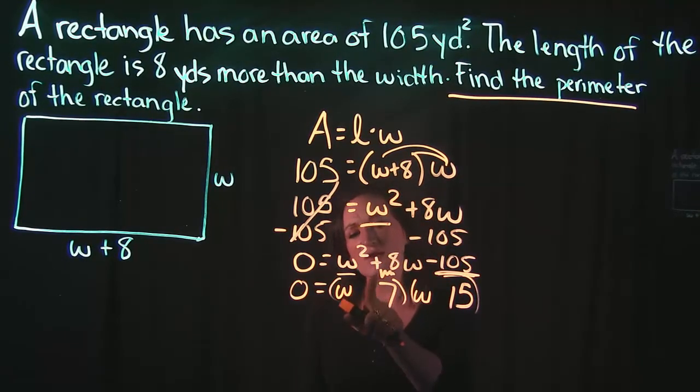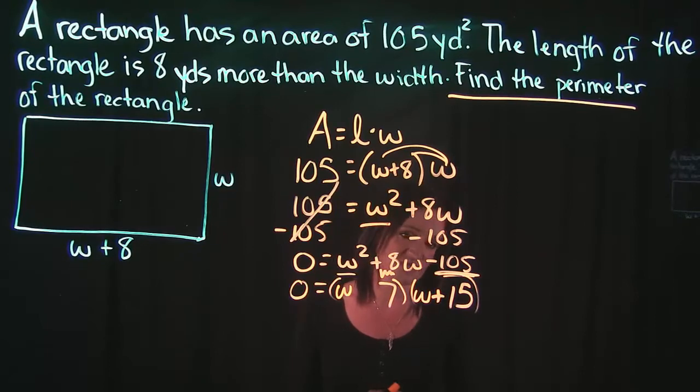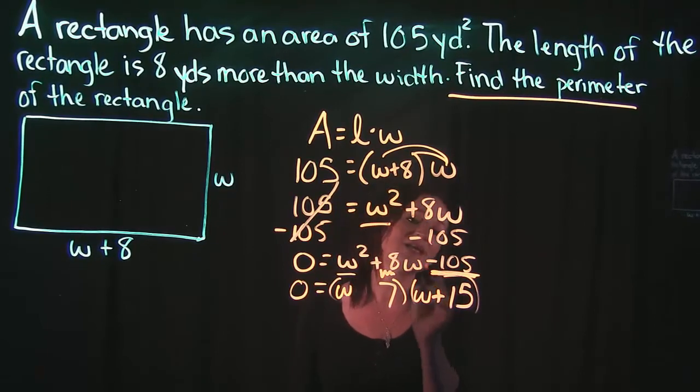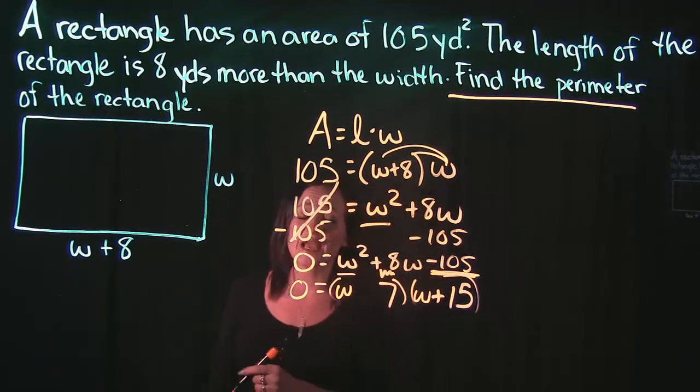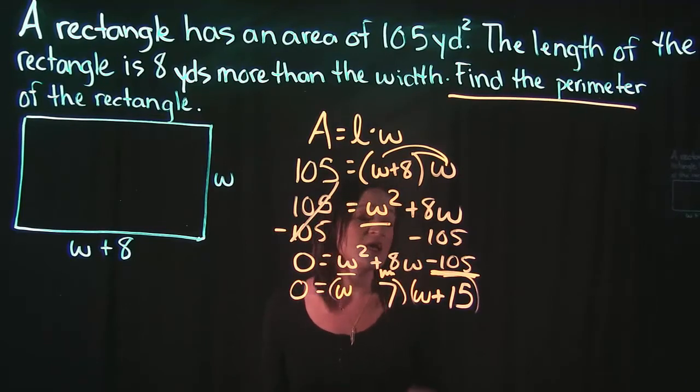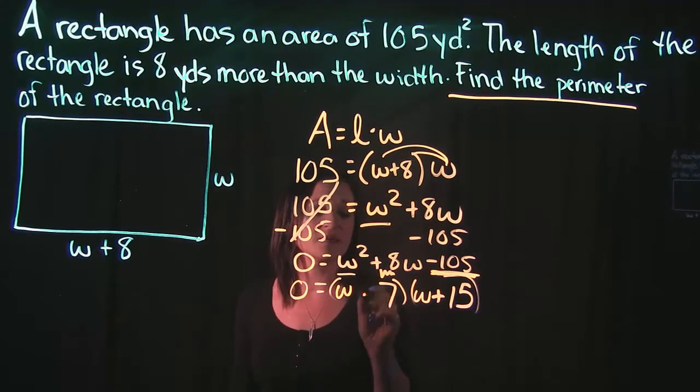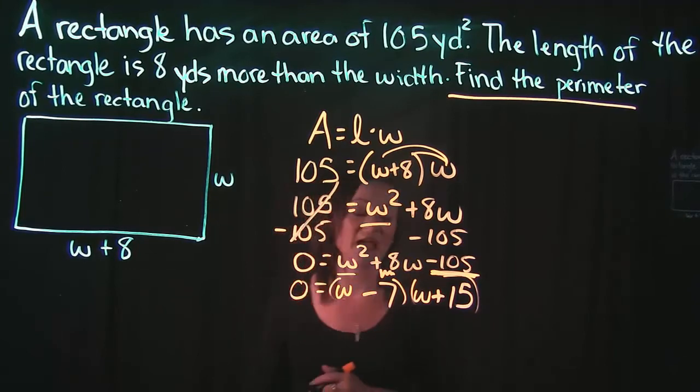Focusing on our signs, whatever sign the middle term has goes with the bigger number. The middle term is positive so the plus goes with 15. Since this last term is negative, the only way to get a negative when you multiply is if they have different signs. So since 15 is positive, the 7 has to be negative.